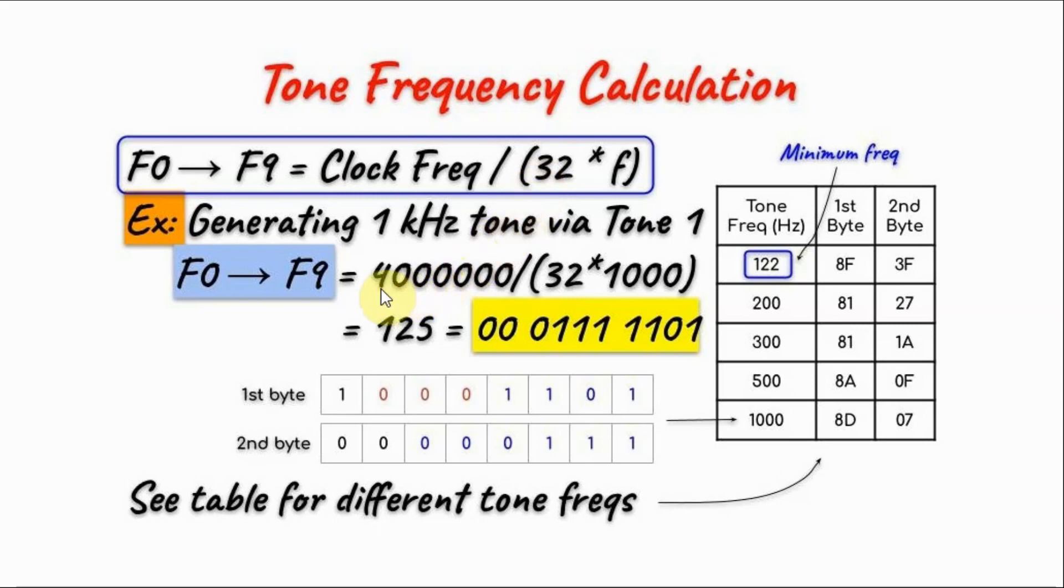So we apply the formula. We have 4 MHz divided by 32 divided by 1 kHz, which gives us a decimal value of 125, and its equivalent 10-bit binary value is shown here.